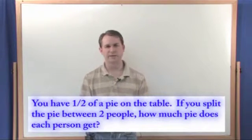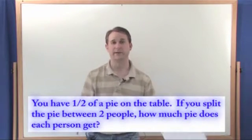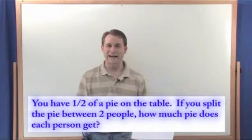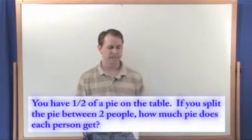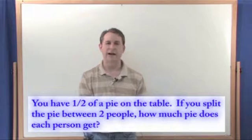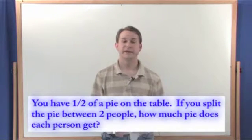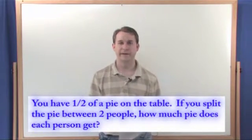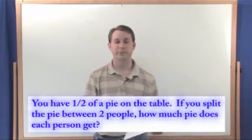So this is clearly division because you're given some piece and you're splitting it between some number of people, so you're dividing it into an equal number of pieces. So don't let the fact that this has a fraction in it confuse you. Just because there's half a pie on the table doesn't change the fact that you're taking that and you're splitting it between two people.